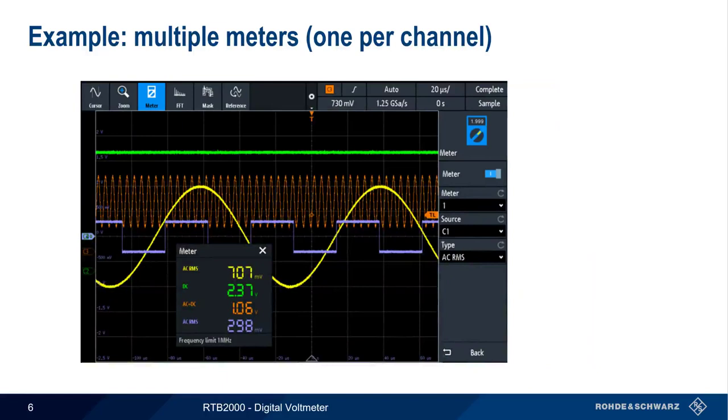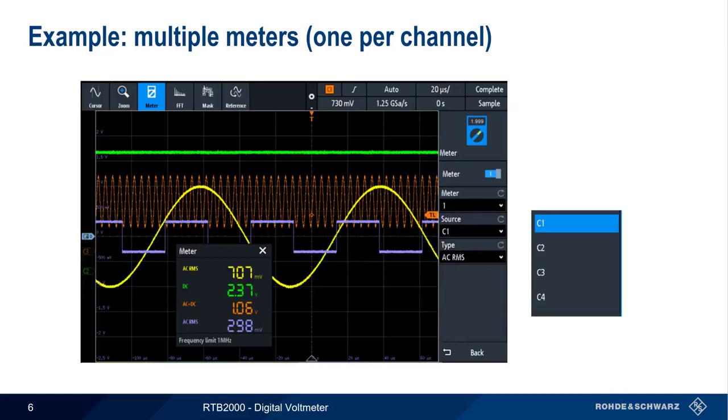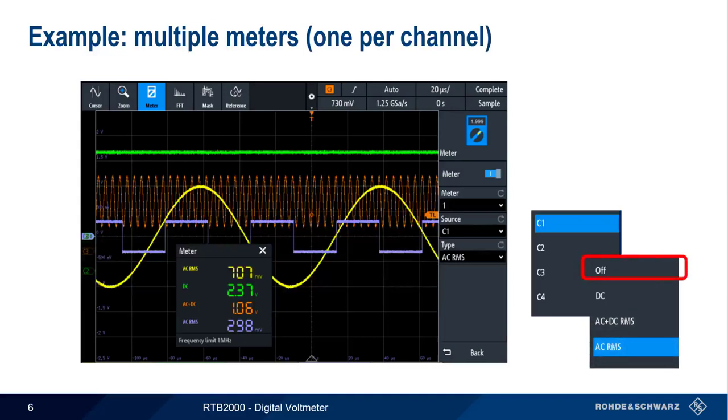As mentioned earlier, the RTB supports up to four simultaneous instances of the digital voltmeter. Here, each of the four voltmeters has been assigned to a different channel, with different measurement types being used for different types of signals: AC RMS on channel 1, DC on channel 2, AC plus DC on channel 3, etc. To turn off any of these measurements, we would simply set the type to OFF.